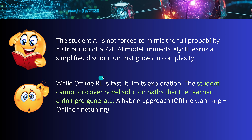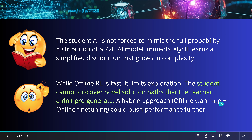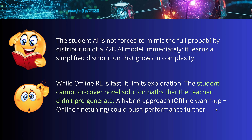While offline reinforcement learning is fast, it limits exploration. The student AI cannot discover novel solution paths that the teacher did not pre-generate. Because we have such a small student AI, it can only mimic the reasoning traces — it cannot discover absolutely new novel solution paths. This is a massive limitation. What is not in the learned intelligence of the 72 billion vision language model teacher, you cannot find it in the 3 billion student. NVIDIA is already thinking about a hybrid approach — offline warm-up and online fine-tuning — to push performance further.